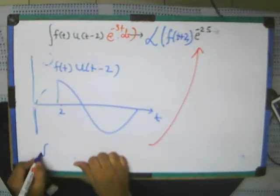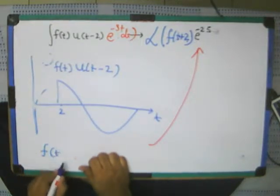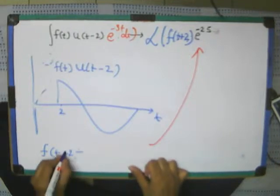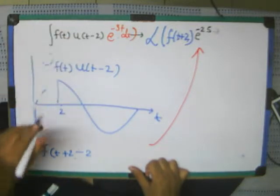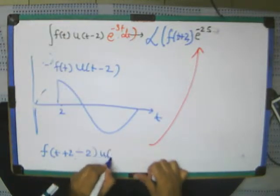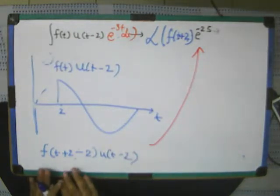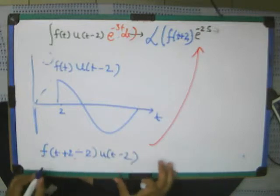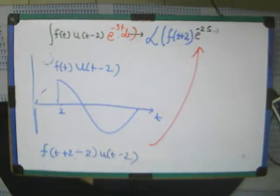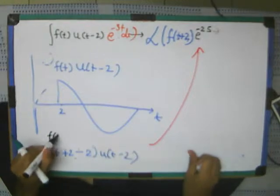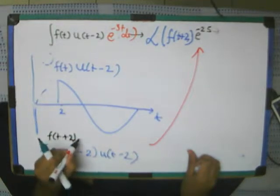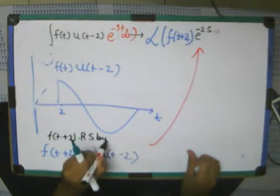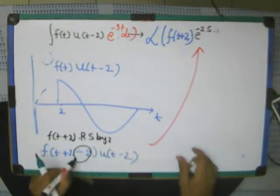Can't I write this as F of t minus 2 plus 2 or plus 2 minus 2, okay, u of t minus 2. In some sense, if I take this minus 2 common because now they are both in shifting, can't I write this equation, this whole equation as F of t plus 2. Right shifted by 2, if I take this minus 2 common in both the sides.